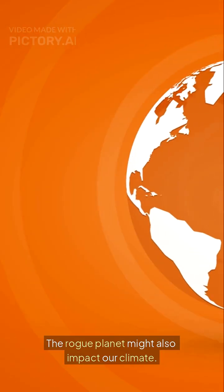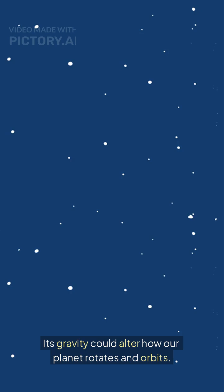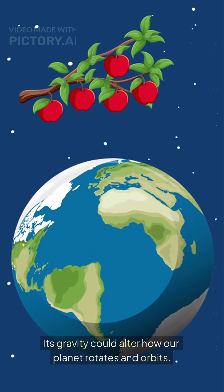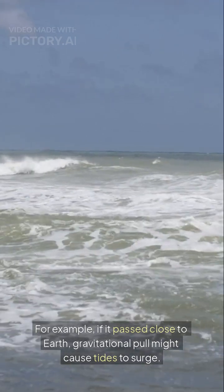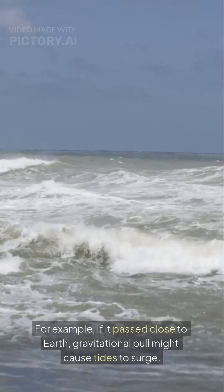The rogue planet might also impact our climate. Its gravity could alter how our planet rotates and orbits. For example, if it passed close to Earth, gravitational pull might cause tides to surge.